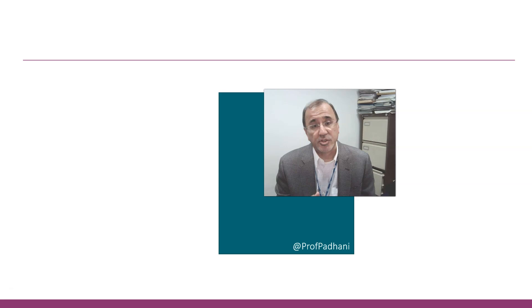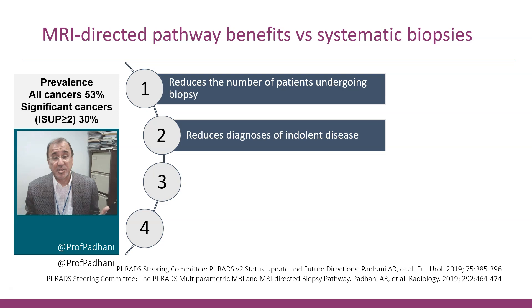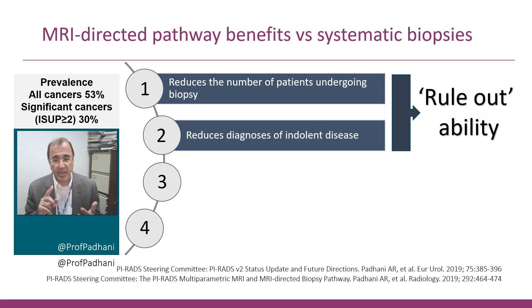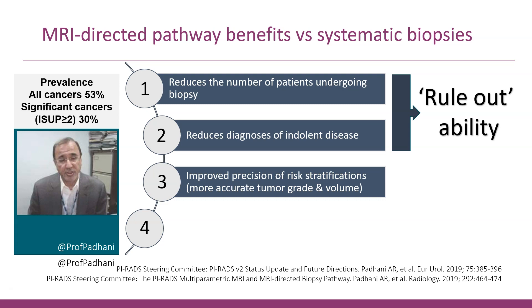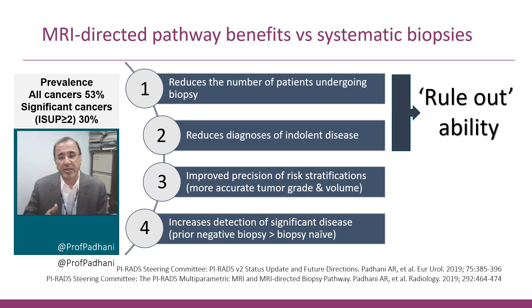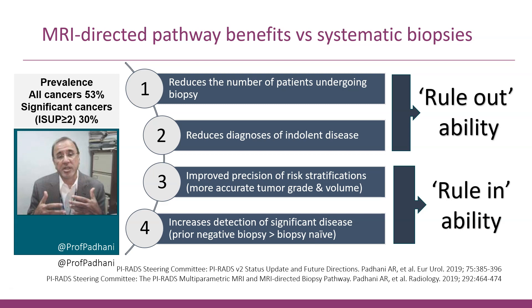Let's start with the benefits of the prostate MRI pathway. The biggest benefit relates to its negative predictive value — its rule-out ability. This reduces the number of patients undergoing a biopsy and reduces the diagnosis of indolent cancer. Urologists are also interested in greater precision of risk stratification, increased detection of clinically significant disease, which appears most beneficial in patients who have had a prior negative biopsy — speaking to the rule-in ability of MRI.